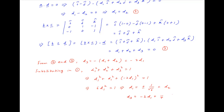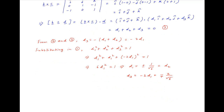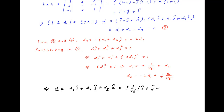Since d3 = −2d1, we have d3 = ∓2/√6. Therefore vector d = d1·i + d2·j + d3·k = ±(1/√6)(i + j − 2k), which is the required answer.